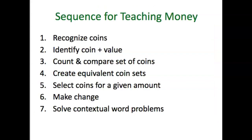When teaching money, the sequence follows the TEKS: start with actual recognition of coins — which one is the penny, nickel, dime — front and back, heads and tails. Then relate the coin to its value, such as a nickel equals five cents. Then move to counting and comparing sets of coins, creating equivalent coin sets — for example, showing a dime and nickel and asking them to create a similar amount using nickels and pennies. Then select coins for a given amount, show 47 cents, show it a different way. Then making change and solving contextual word problems.